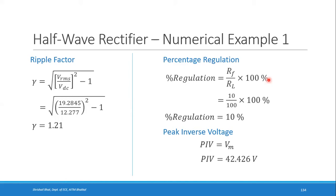To summarize the approach: from the given data, first find Vm; from Vm find Im; from Im calculate IDC and IRMS; from those find VDC and VRMS; then calculate input power, output power, efficiency, ripple factor, regulation, and other quantities.